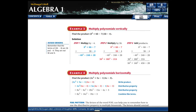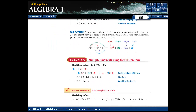Down here at the bottom they discuss the FOIL method — first, outer, inner, last. This only works with binomials — a two-term polynomial times a two-term polynomial. The order of multiplication is the same as when we use the distributive property anyway.